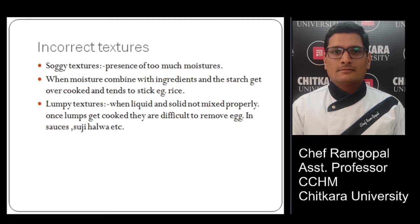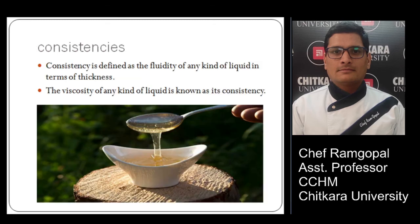Soggy texture results from too much moisture in the product — when moisture combines with ingredients and starch gets overcooked, it tends to stick, like rice. Lumpy texture occurs when liquid and solid are not mixed properly; once lumps get cooked they are difficult to remove, like eggs in sauces or suji halwa.